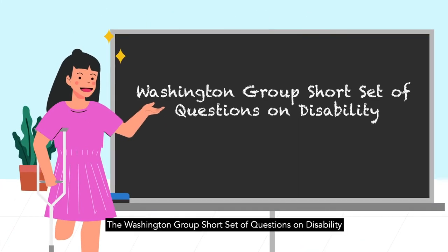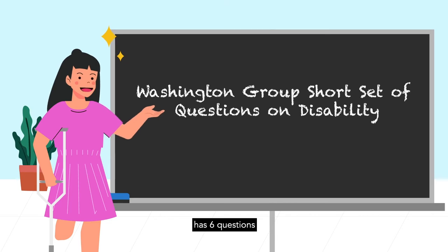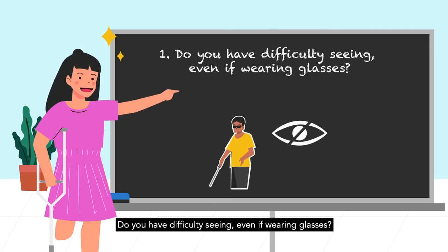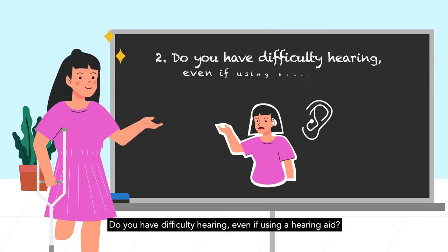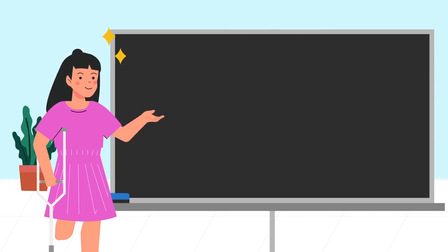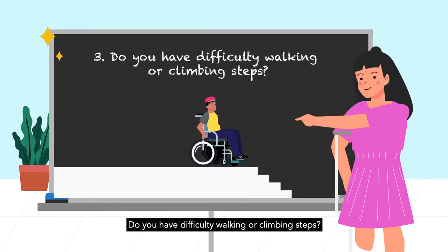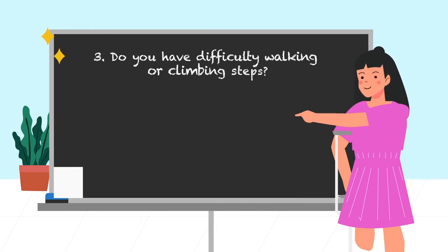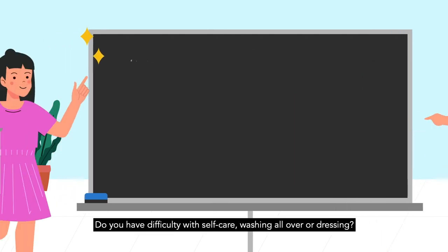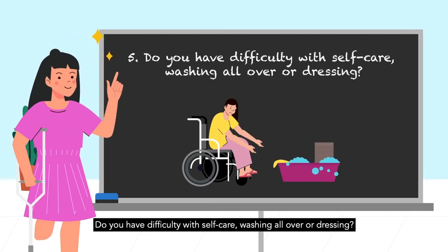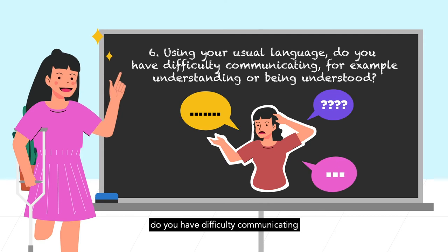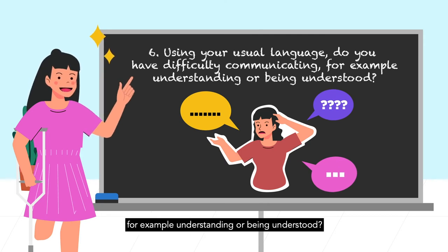The Washington Group Short Set of Questions on Disability has six questions regarding limitation in functioning. They are: Do you have difficulty seeing, even if wearing glasses? Do you have difficulty hearing, even if using a hearing aid? Do you have difficulty walking or climbing steps? Do you have difficulty remembering or concentrating? Do you have difficulty with self-care, such as washing all over or dressing? Using your usual language, do you have difficulty communicating, for example understanding or being understood?